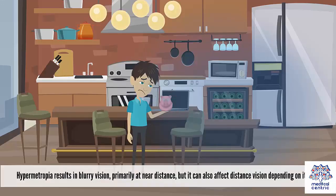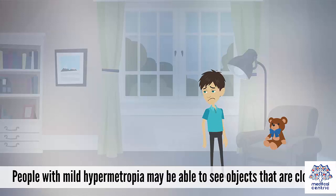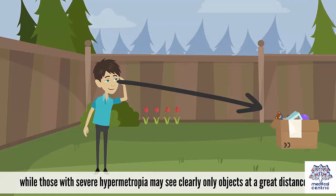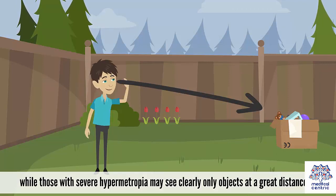Hypermetropia results in blurry vision primarily at near distance, but it can also affect distance vision depending on its severity. Also known as farsightedness or hyperopia, hypermetropia may be severe or mild. People with mild hypermetropia may be able to see objects that are closer, while those with severe hypermetropia may see clearly only objects at a great distance away.